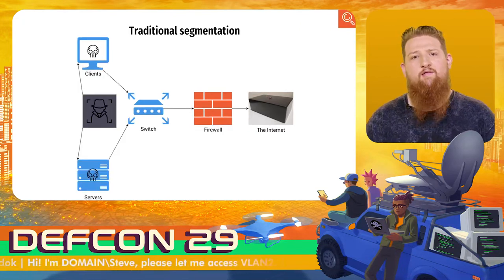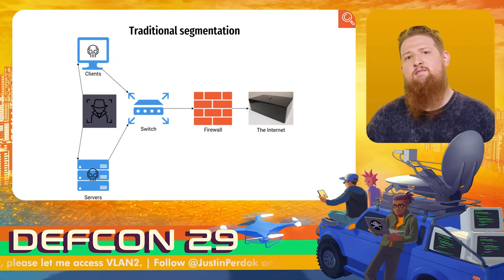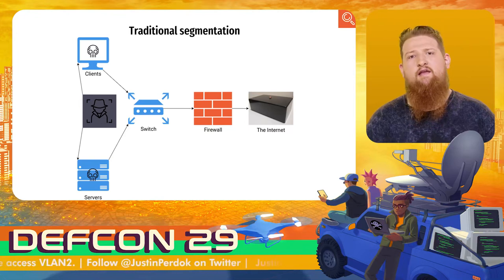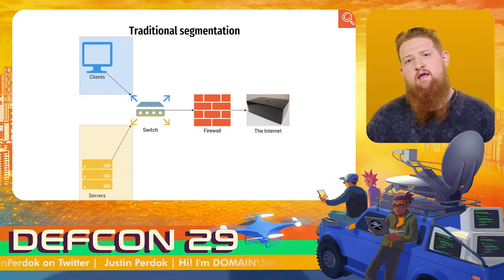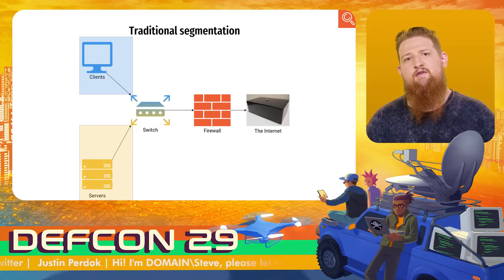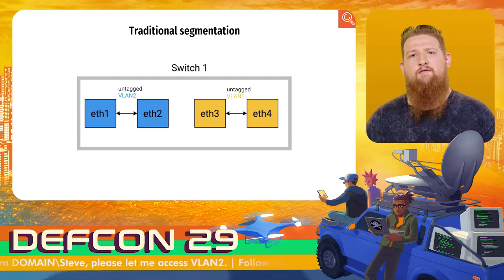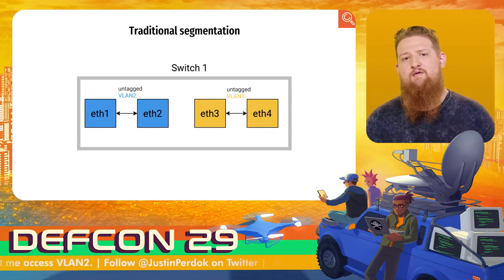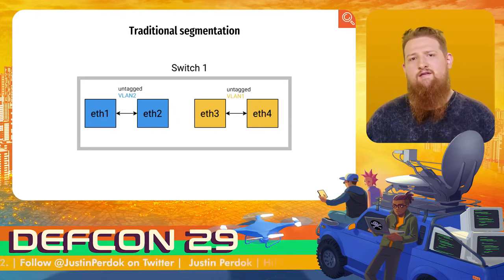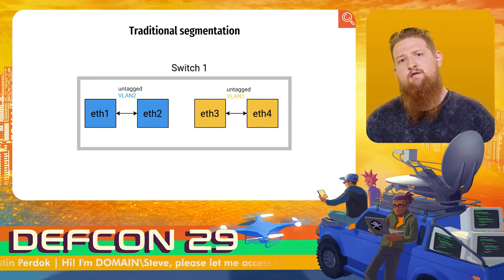Then the company hires a pentester who performs an assessment and recommends implementing network segmentation. The client decides to implement zones — a blue client zone and a yellow server zone — to restrict traffic from flowing freely between them. They would use VLANs. For example, blue ports represent VLAN ID 2 and yellow ports represent VLAN ID 1. Whenever a device connects to a blue port, traffic only flows to other blue ports. Configuring ports this way is called access ports. Devices will only see and talk to others with the corresponding VLAN color.